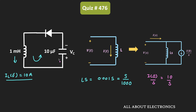Similarly for the capacitor, there is no initial charge, so in the equivalent S-domain it can be represented as 1/(CS). The value of C is equal to 10 μF, so that is equal to 1/(10⁻⁵ × S), or equivalently 10⁵/S. This is the equivalent S-domain representation for the capacitor.